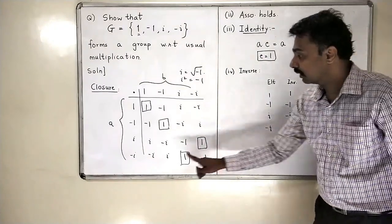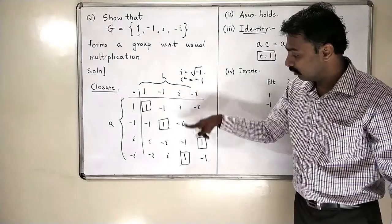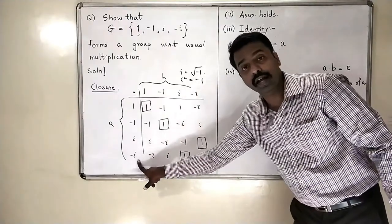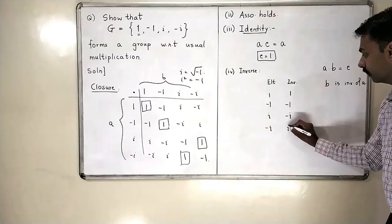This is saying that i into minus i is 1. This means that inverse of i is minus i. And last is, minus i into i is 1. So this means inverse of minus i is i.